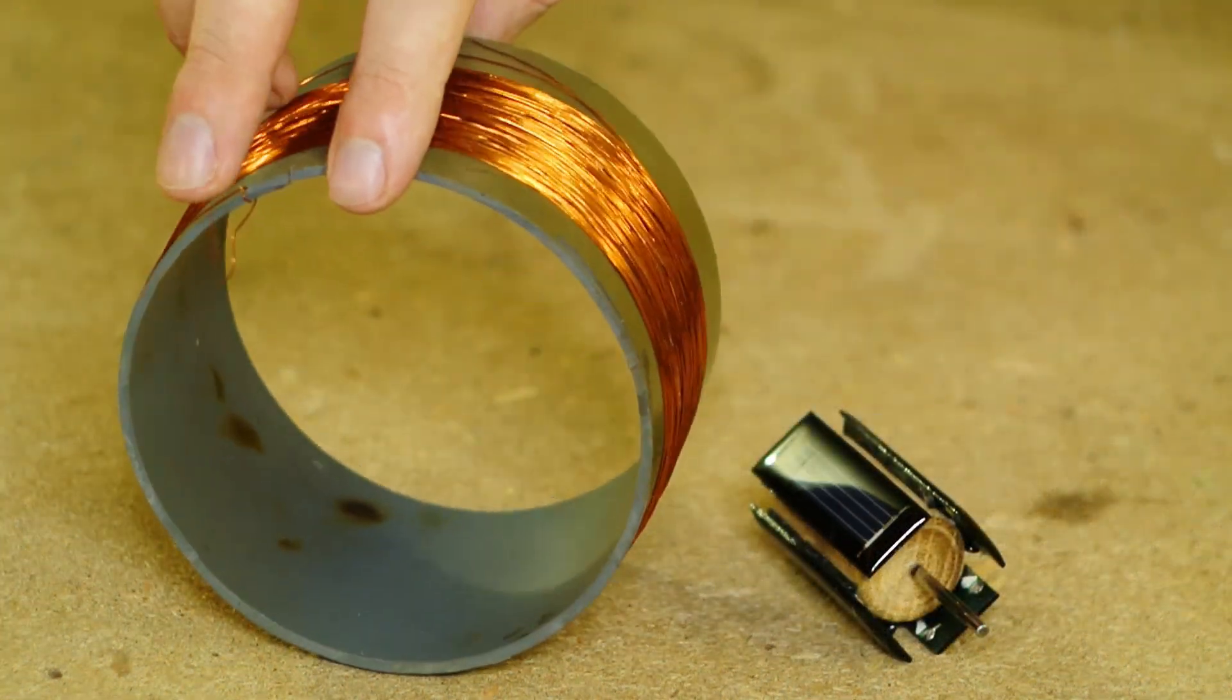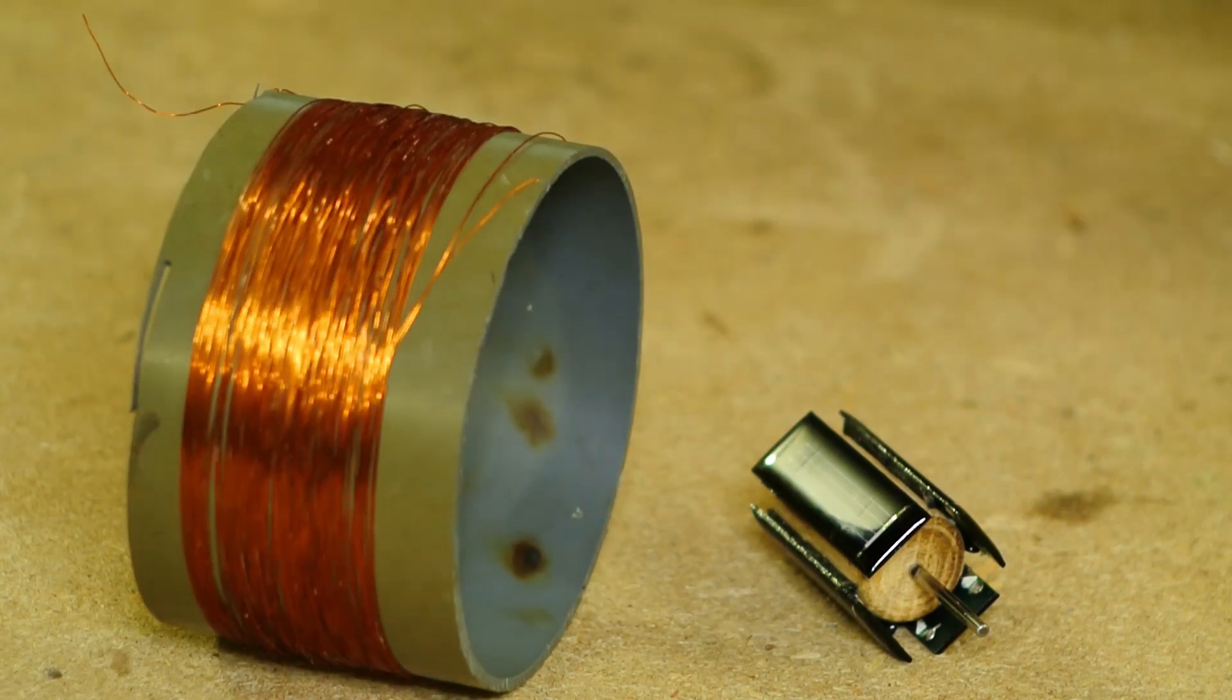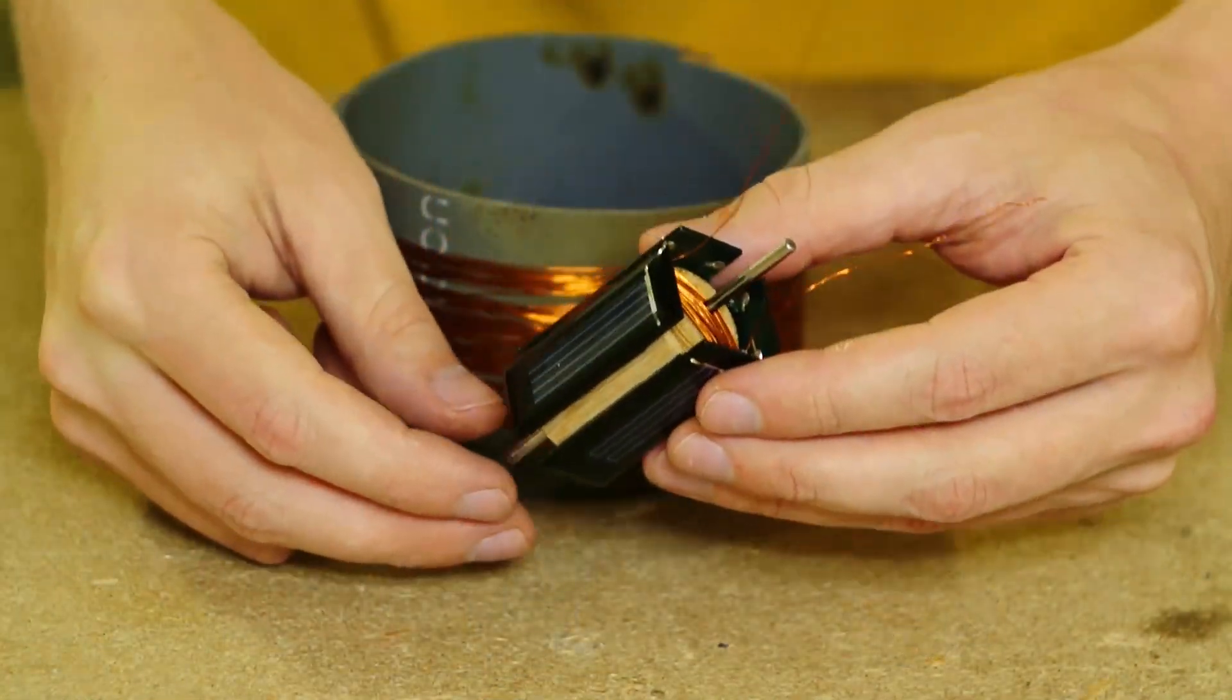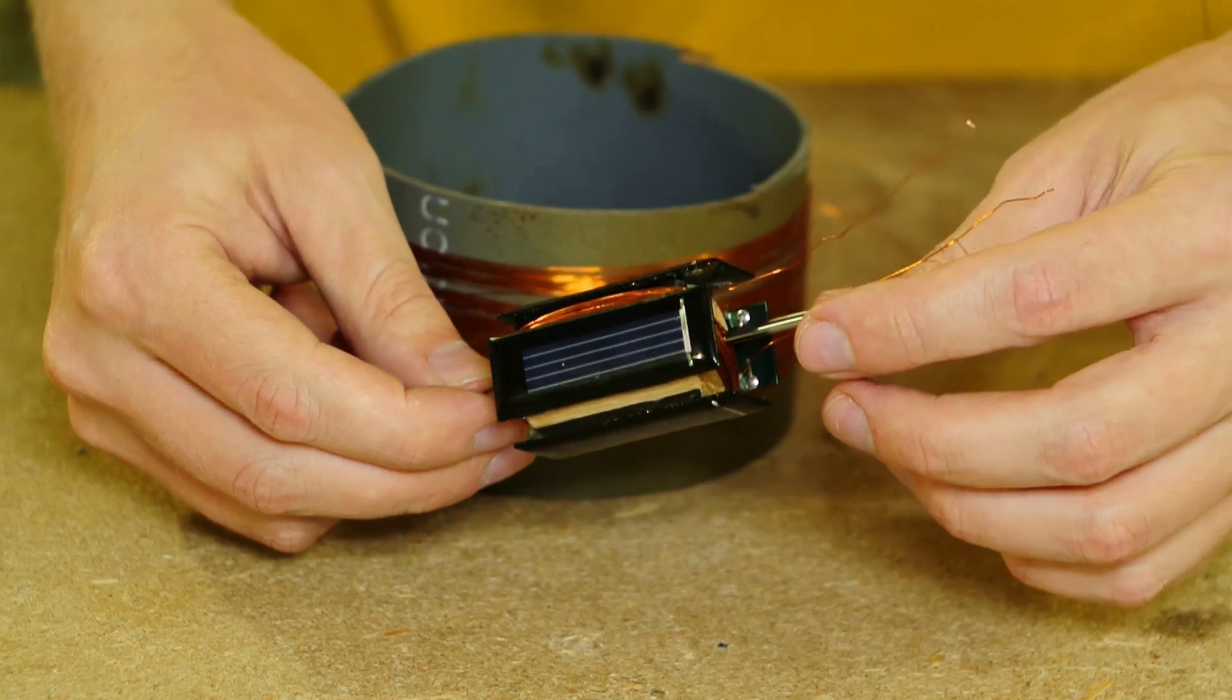We need a wire 0.3mm thick for the motor winding. Now you can see the first winding of 100 turns.